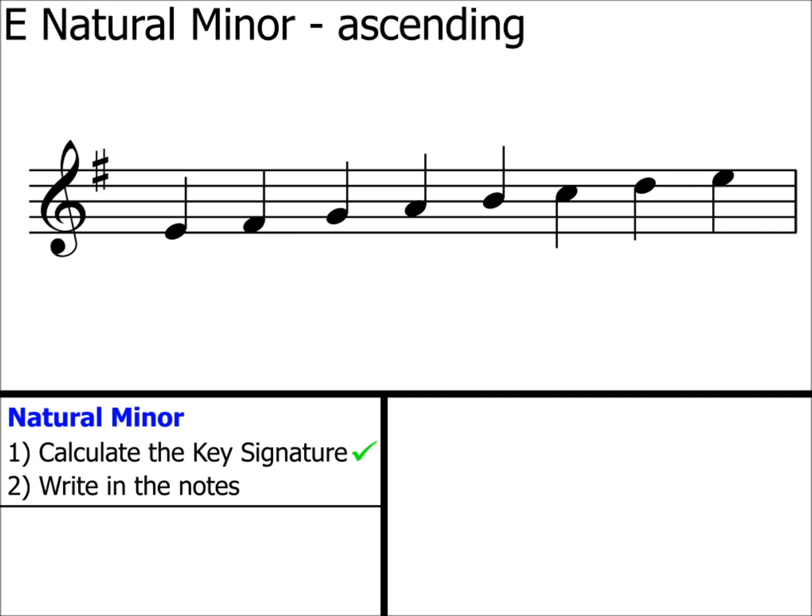It's extremely important that you check to ensure that you've put a note on every line and in every space. More of this in part 3 of this series of videos. That's it. With step 2 completed, you've now written a natural minor scale. It's as simple as that. If you've watched my video on major scales, you'll recognise that this is the same method as calculating major scales.